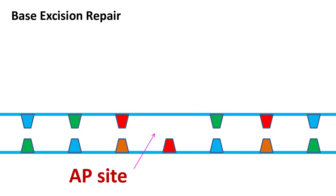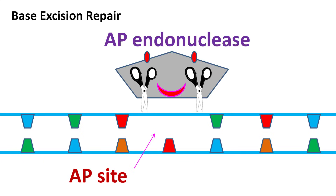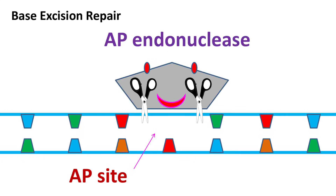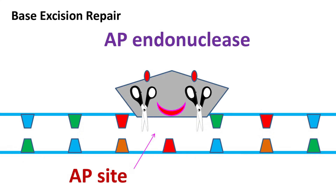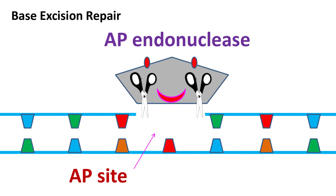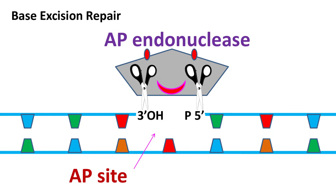In the next step, AP endonuclease cleaves this region to yield a free 3'-hydroxyl group and a 5'-phosphate group.